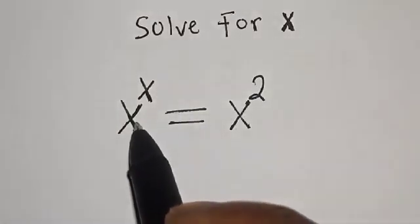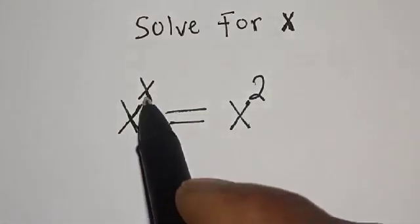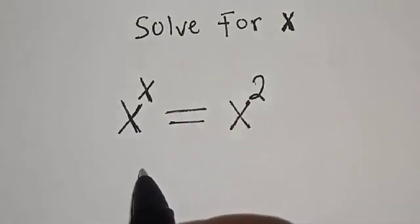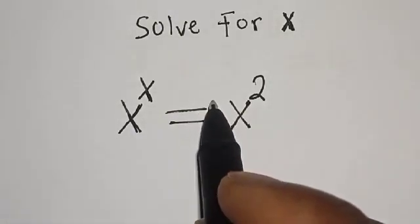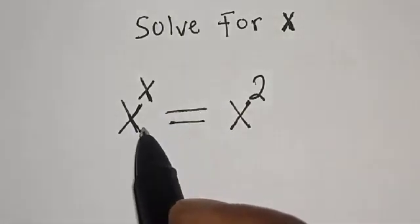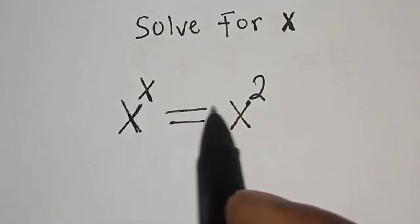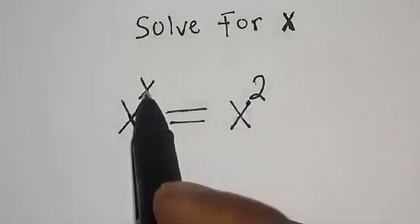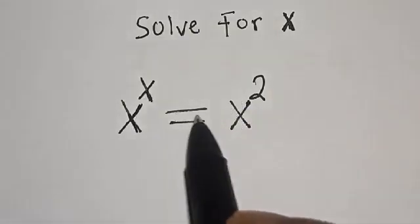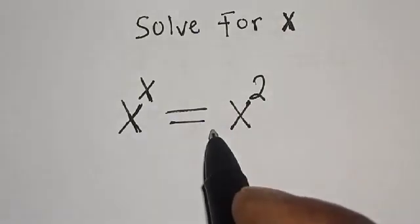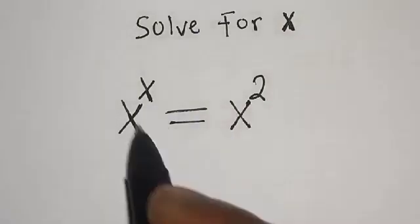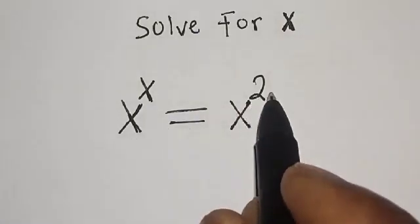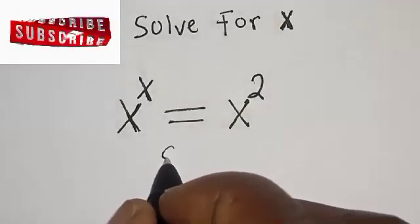Solve for x: s raised to power s is equal to s squared. Hi everyone, welcome to my class. In this class we want to look at how we can quickly find the value of s from this given exponential equation: s raised to power s is equal to s squared. But before we proceed, please don't forget to like, share, comment and subscribe. Thank you. Solution.